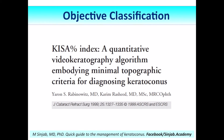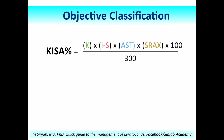I will start with the very early objective classification developed by Rabinovich and Rashid — the KISA index. It is a quantitative classification based on a video keratography algorithm. The KISA is an index based on K — the K-central value — the inferior-superior difference, the astigmatism, and the skewed radial axis.